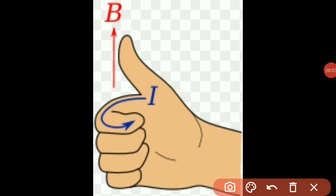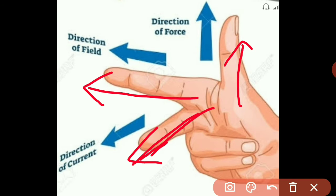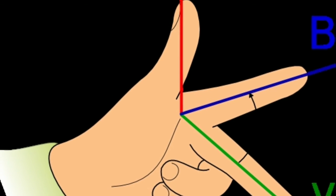Let us revise the right-hand thumb rule, which tells that if the curl is showing the direction of current in a coil, then the thumb will give the direction of magnetic field. Fleming's right-hand rule tells that if the index finger of the right hand is in the direction of magnetic field and the thumb points in the direction of motion of the conductor, then the induced current will be flowing in the direction of the middle finger if these three are mutually perpendicular. And we remember Lorentz force on a moving charge.